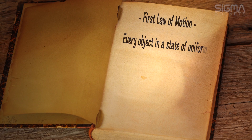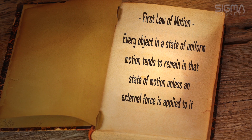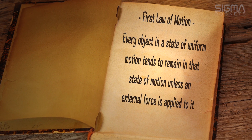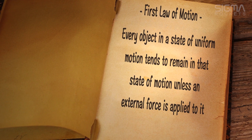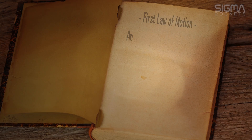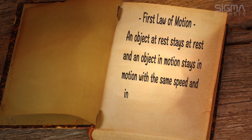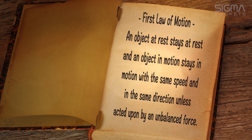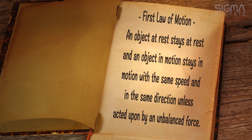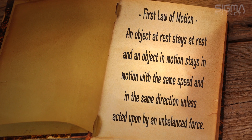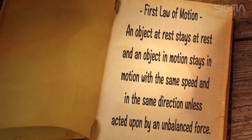Newton's first law states: every object in a state of uniform motion tends to remain in that state of motion unless an external force is applied to it. This can also be stated as: an object at rest stays at rest, and an object in motion stays in motion with the same speed and the same direction unless acted upon by an unbalanced force. We can see this law at work with our wagon — if left alone, the wagon will remain still.